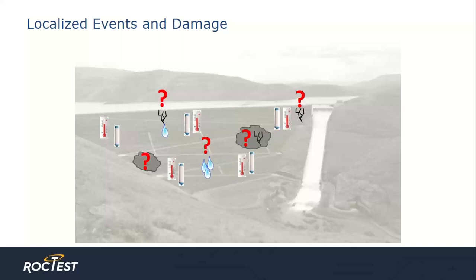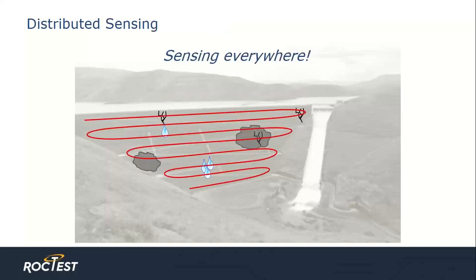Another downside to traditional sensing is cost. Adequate evaluation of a large structure such as a dam requires an extremely large number of sensors, making cost a primary concern for both materials and installation. In contrast, because the distributed cable itself is the sensor — shown here as the red line — the dam can be completely covered fairly economically. Using distributed temperature and strain sensing, we can monitor for soil deformation using the strain data and for leak detection using temperature changes, both with a spatial resolution of one meter.